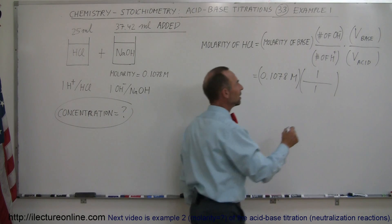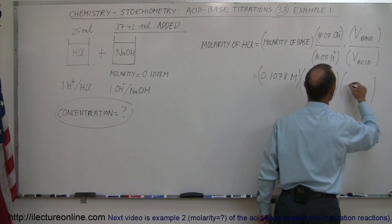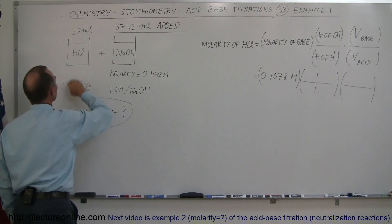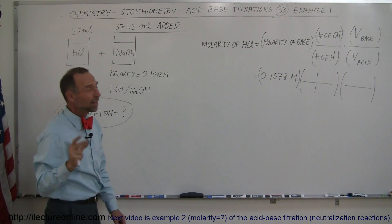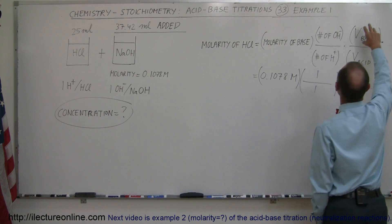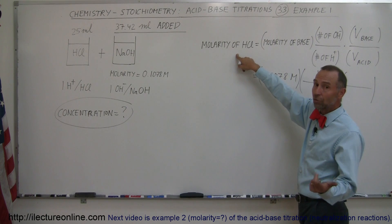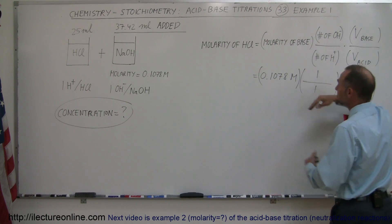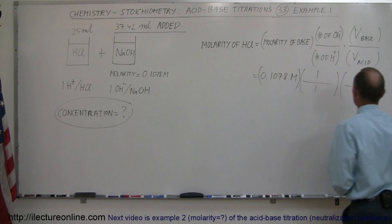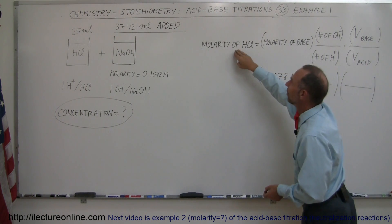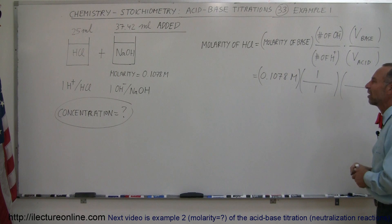Now, we multiply that times the ratio of the volumes of the two solutions. So, we put the volume of the base that we added, and we divide it by the volume of the unknown sample. Now, that makes a lot of sense when you think about it. The more base you have to add, the more volume, the higher the concentration of the acid you're trying to neutralize. The less the volume of the base, the less the concentration of the molarity. And vice versa, the more acid you started with, if this is a bigger number and you need less of the base, then you know the molarity is not as great. So, it makes a lot of sense to have that ratio.